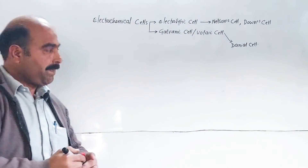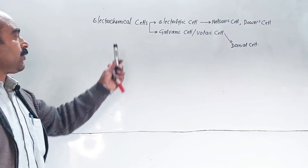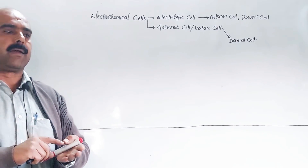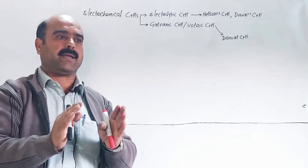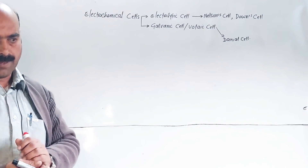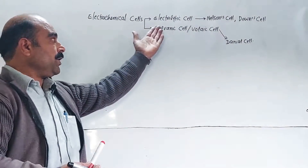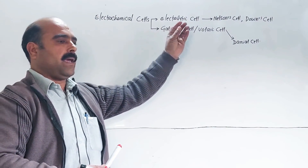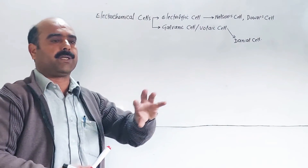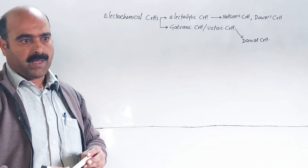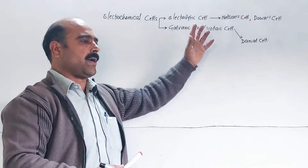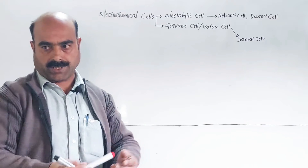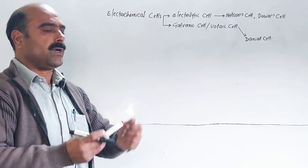Electrochemical cells are devices in which conversion of chemical and electrical energies is done. In an electrolytic cell, electrical energy drives a chemical reaction — that is, electric current produces a chemical reaction.